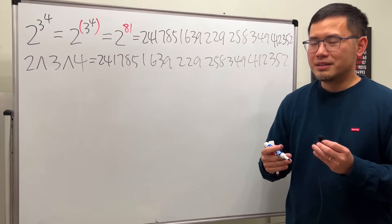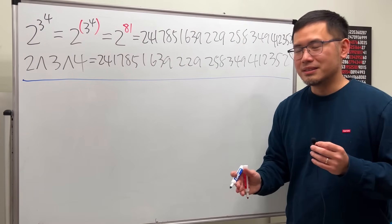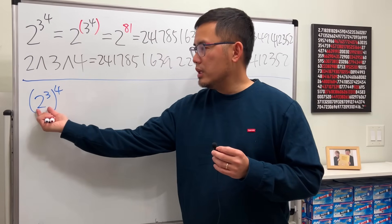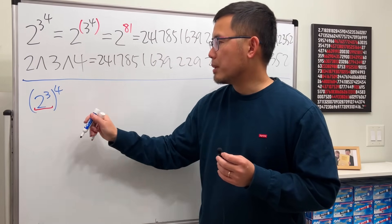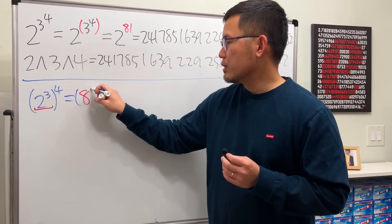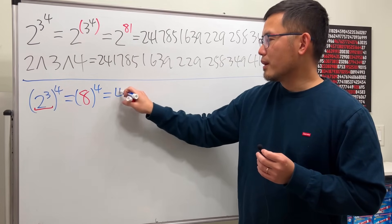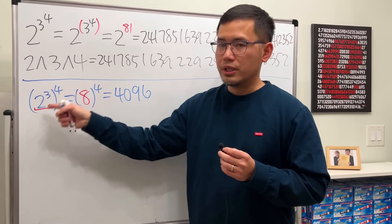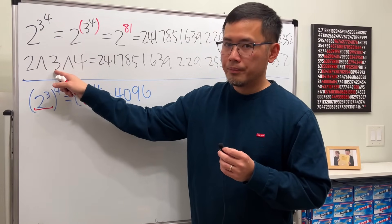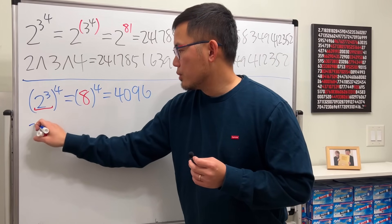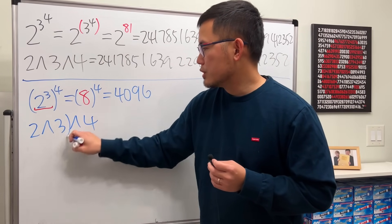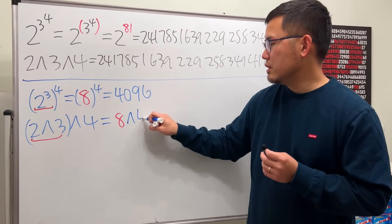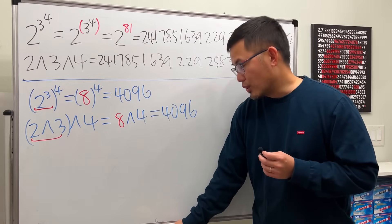Parentheses matter in math. If I ask for two to the third power, and then to the fourth power — with parentheses around the base — we do 2 to the third first: 2 times 2 times 2 gives 8, then raise that to the fourth power, which is 4096. If you want to enter this with caret keys, you write 2 caret 3 caret 4 with parentheses around the 2 caret 3, and you'll get the same result: 8 to the fourth equals 4096.